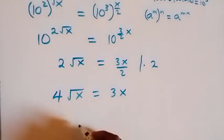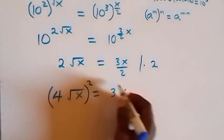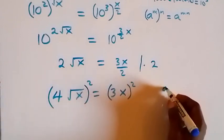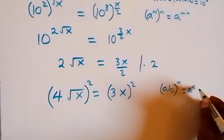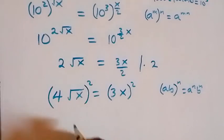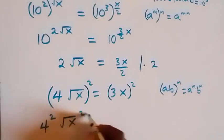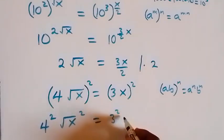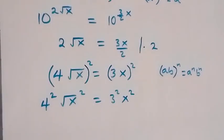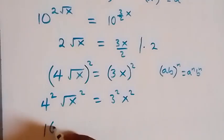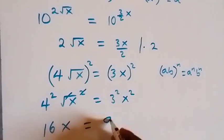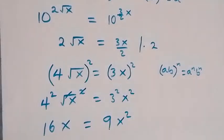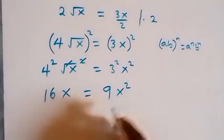Because of the square root, let's take the square on both sides. We square the left side and also the right side. From the law that (ab) raised to power n equals a raised to power n times b raised to power n, this becomes 4 squared times root x squared equals 3 squared times x squared. 4 squared is 16, and square cancels square root, so that gives simply 16x equals 9x squared.